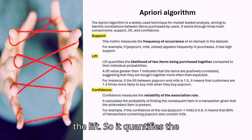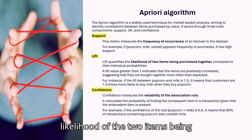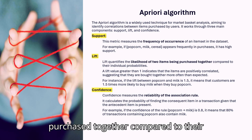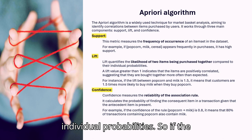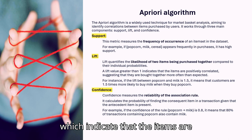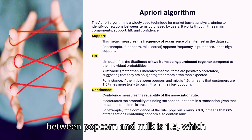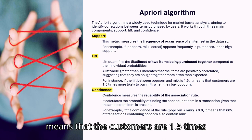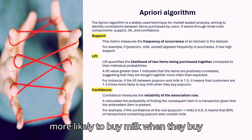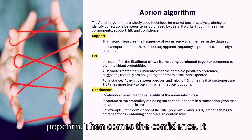Second important thing is the lift. It quantifies the likelihood of two items being purchased together compared to their individual probabilities. If the outcome of lift is greater than 1, it indicates that the items are positively correlated, otherwise negatively. For example, if the lift between popcorn and milk is 1.5, which means that customers are 1.5 times more likely to buy milk when they buy popcorn.